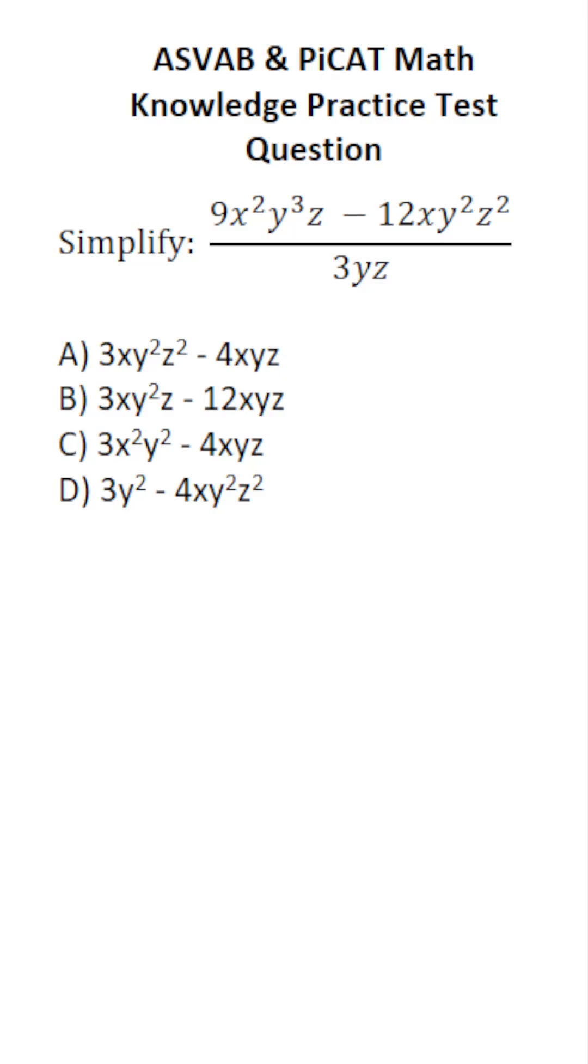It's a math knowledge practice test question for the ASVAB and PICAT to simplify this expression. So to do that, you have to know the quotient rule, which says if you have a to the m over a to the n, that's equal to a to the m minus n.